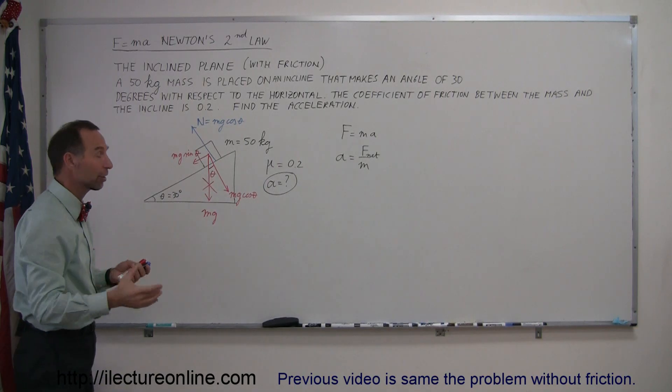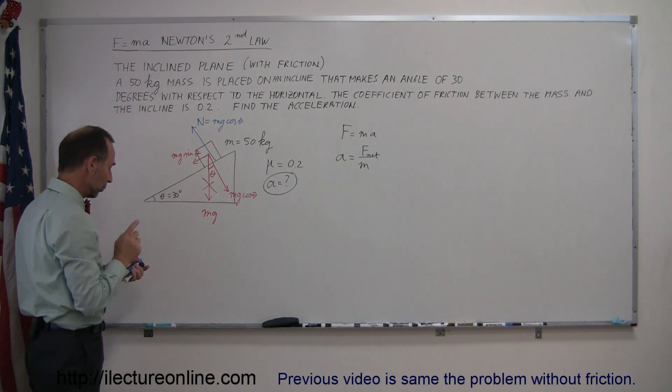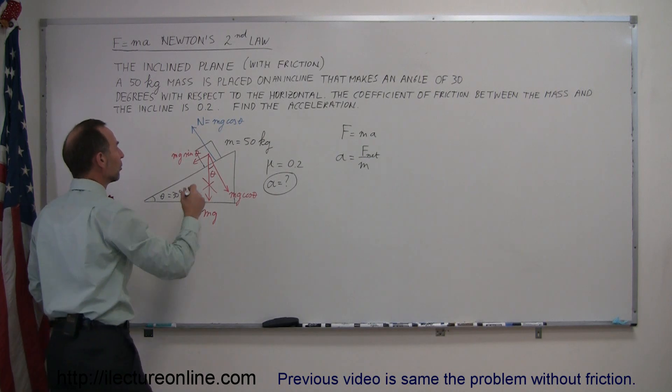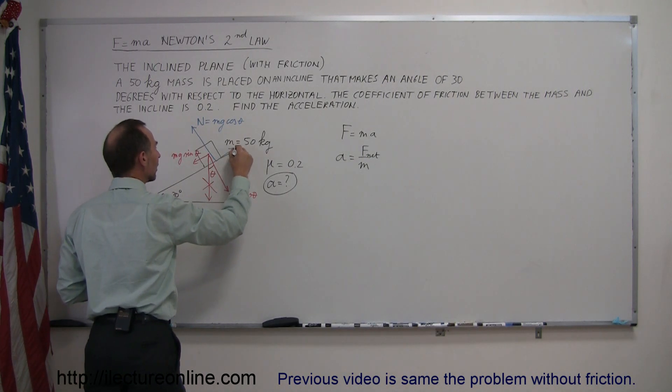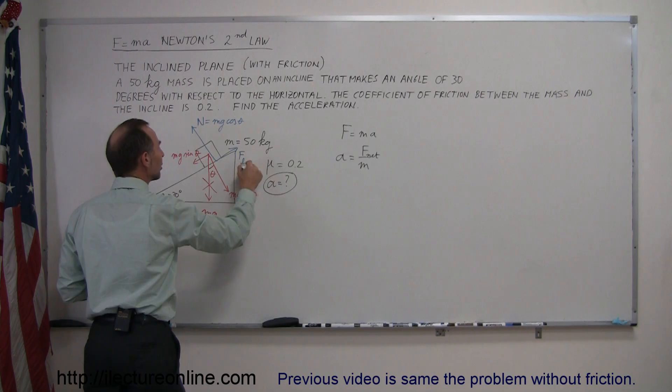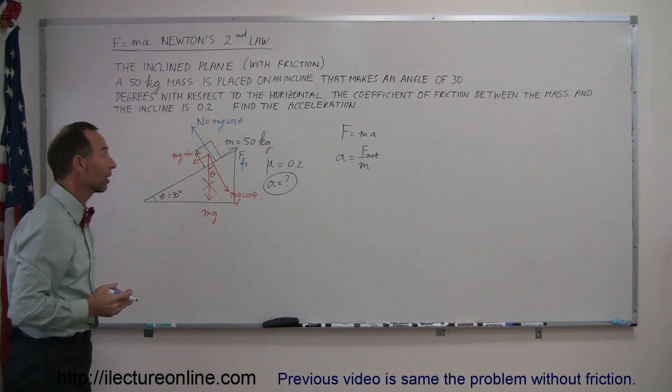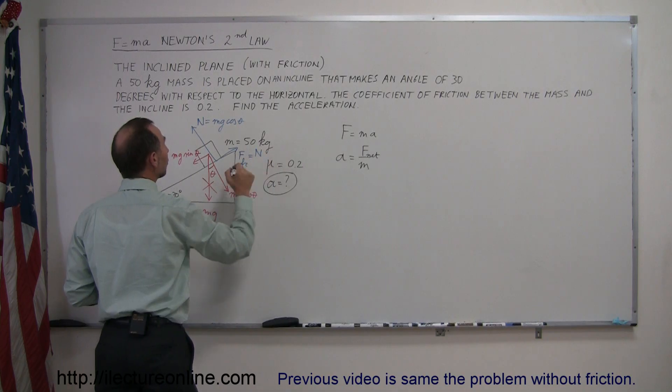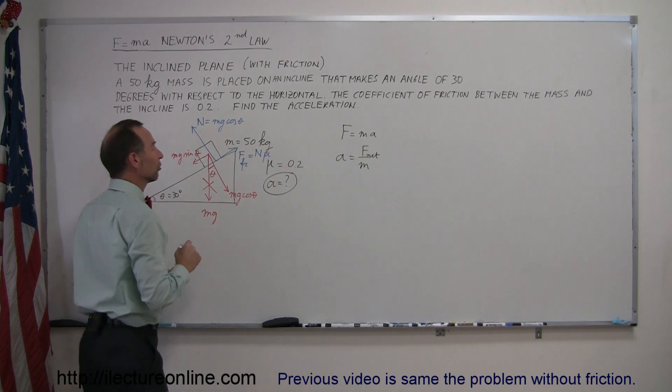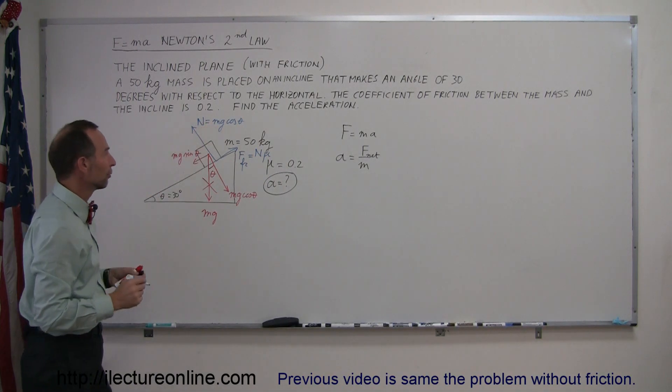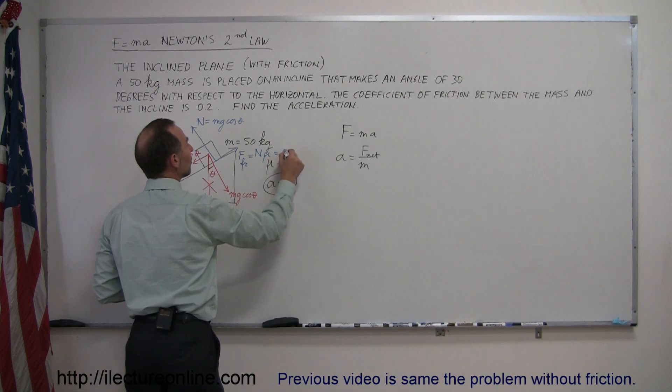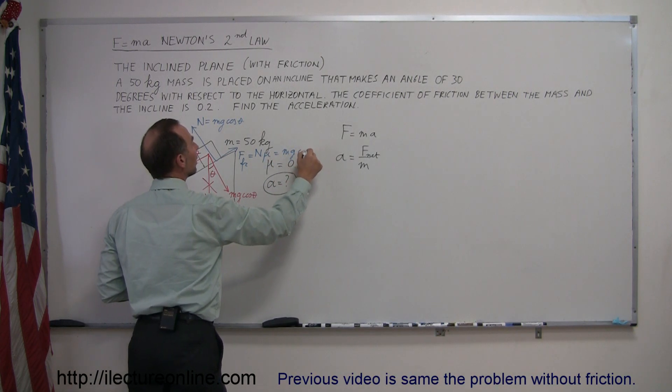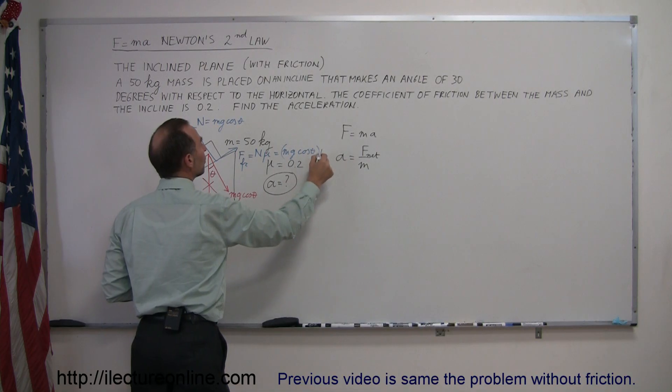So imagining there's no friction, the object will slide down the incline, so we know there's going to be a friction force pushing back in the opposite direction, trying to retard the motion or retard the acceleration. And the friction force, by definition, is equal to the normal force times the coefficient of friction mu. And since we know that the normal force is mg cosine theta, this can be written as mg cosine theta times mu.